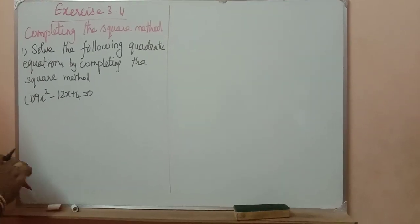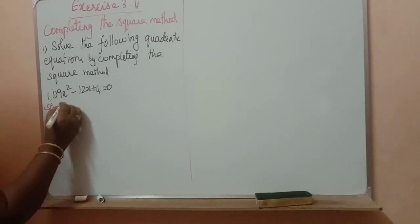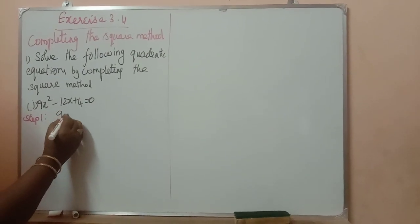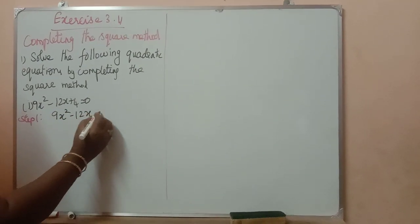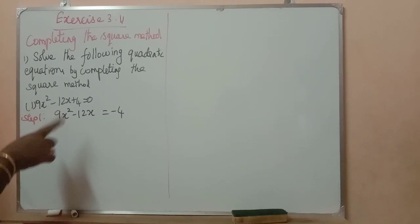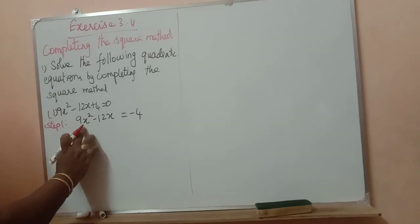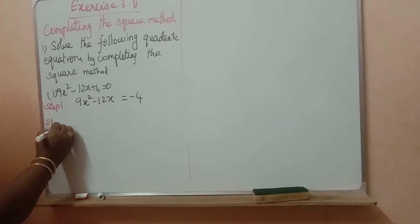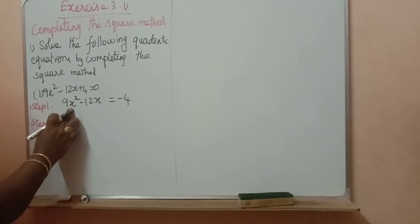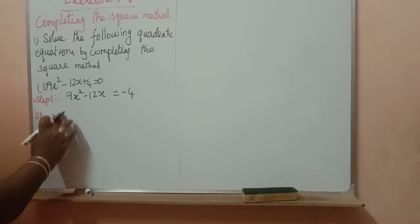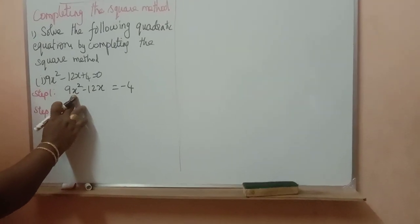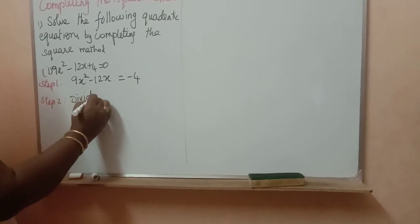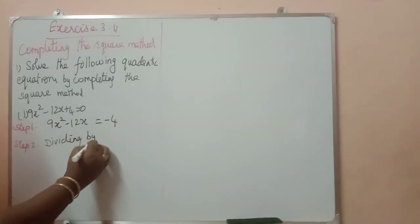Step 1: constant should be on the right-hand side. 9x square minus 12x is equal to minus 4. Only x square and x term should be on the left-hand side. Step 2: coefficient of x square should be 1. Other than 1, we have to divide by that. So, dividing by 9.